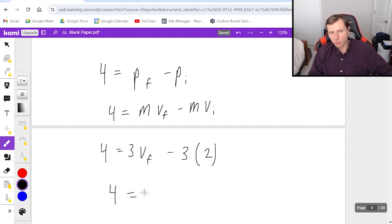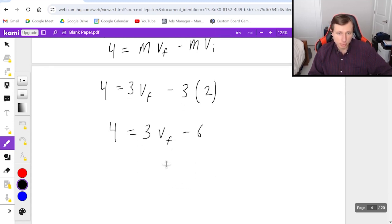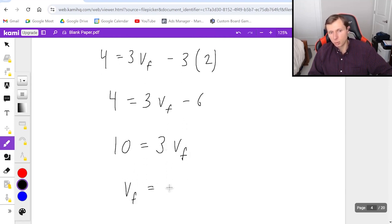So simplifying, four equals three v final minus six. I'm solving for vf, so add six to both sides. Ten equals three v final. Divide by three. We'll get a final speed of positive 3.3 meters per second.